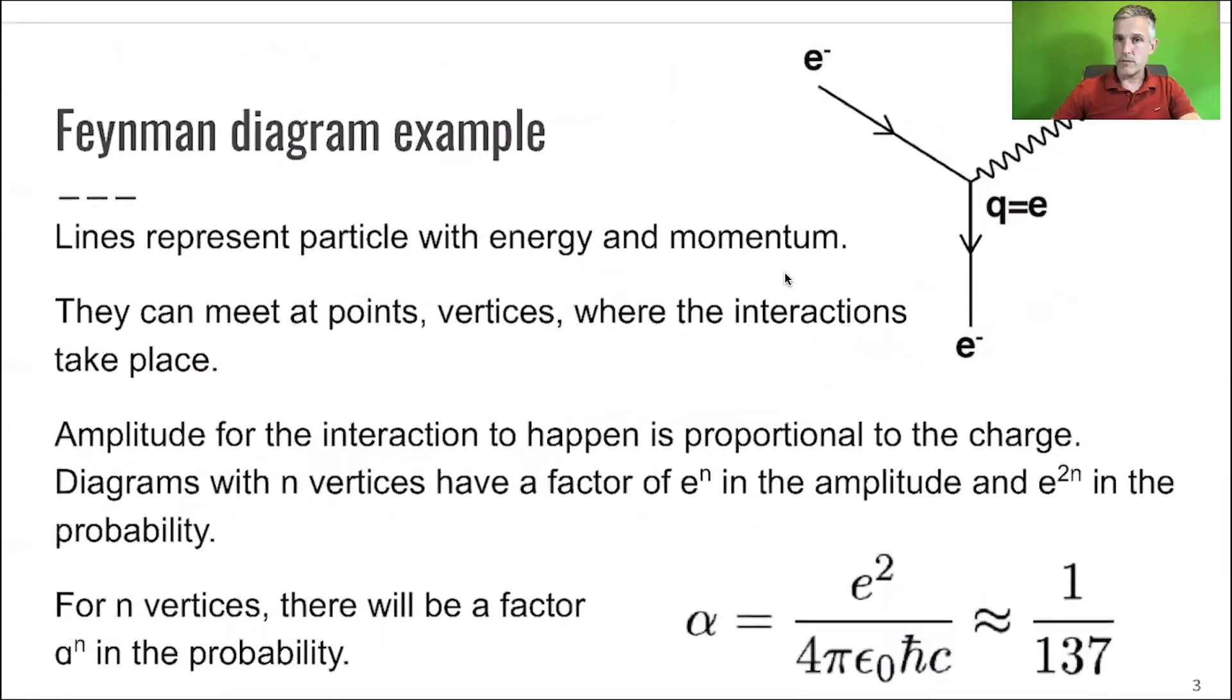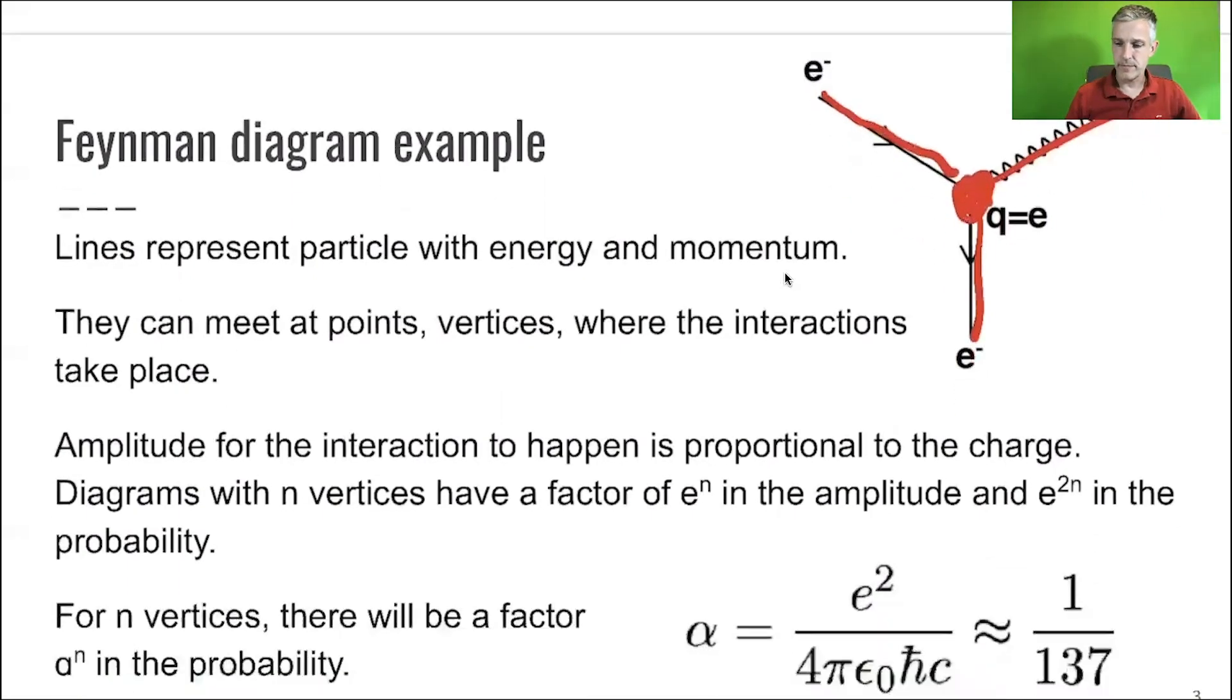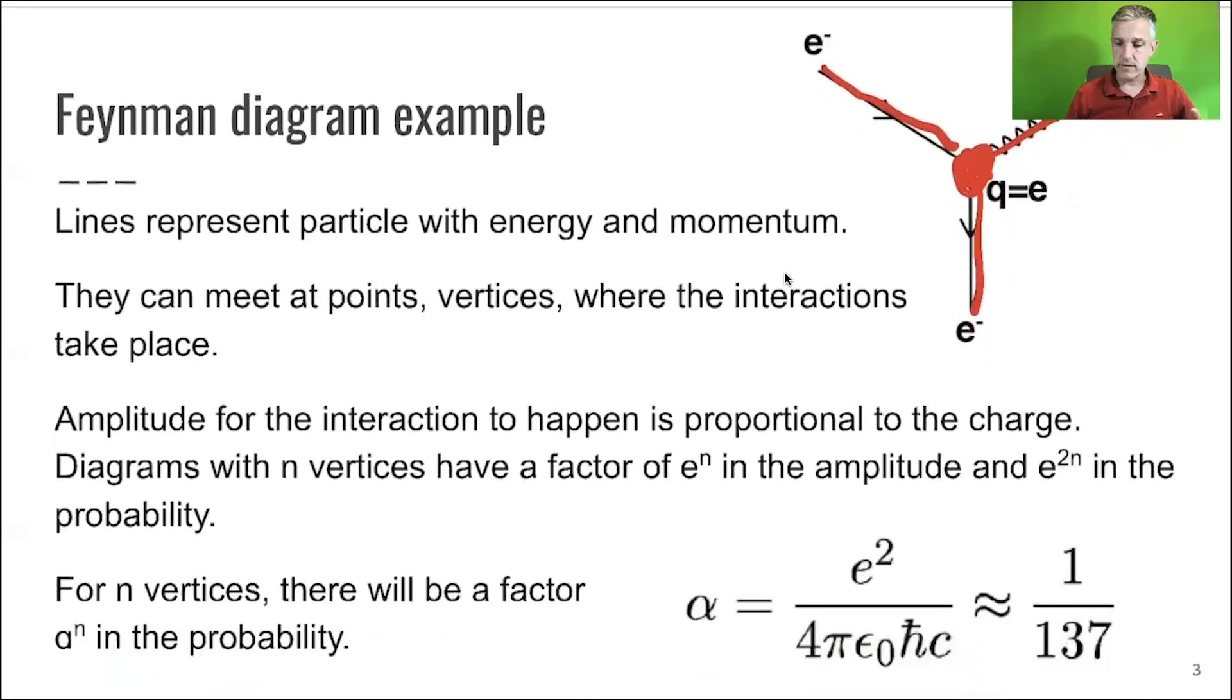Here's one example of a diagram. Let me just put this down here so you can see this. So this is an electron radiating a photon. You see components like those lines here. Those represent particles with energy and momentum. I also want to consider the spin. And they meet at a point. This point here is called a vertex.